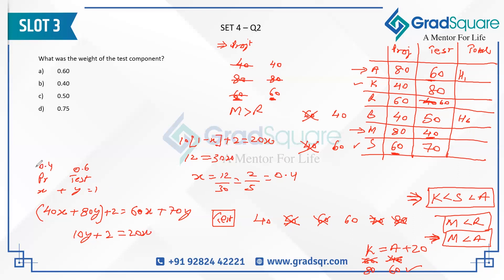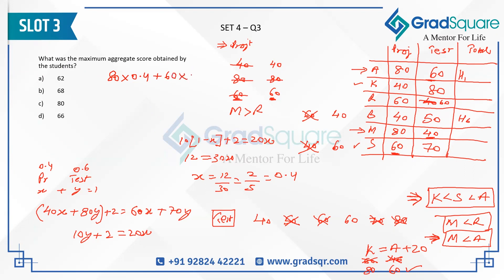The weight of the test component is 0.6. For question 3: what is the maximum aggregate score? That belongs to Amala (A), who has project score 80 and test score 60. Aggregate = 80 × 0.4 + 60 × 0.6 = 32 + 36 = 68. So the maximum aggregate score is 68.